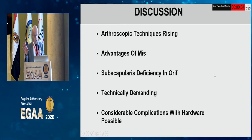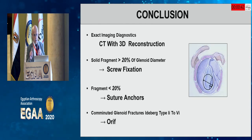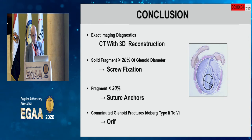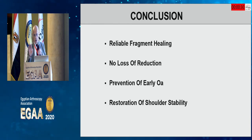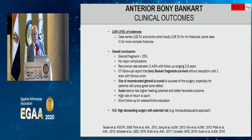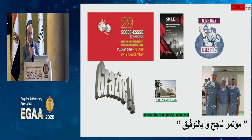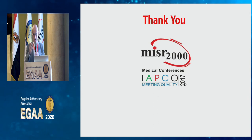Arthroscopic techniques are technically demanding. The subscapularis is protected. Possible complications include screw malpositioning with metallic pinning. CT scan with reconstruction aids planning. Options include screw fixation, suture anchors, or for comminuted fractures, open ORIF. For a very unstable shoulder, a Latarjet may be used. The fragment must be reliable with no loss of reduction; adequate compression is needed. This prevents early osteoarthritis and restores shoulder stability. I am happy to have been here for this congress. Thank you.